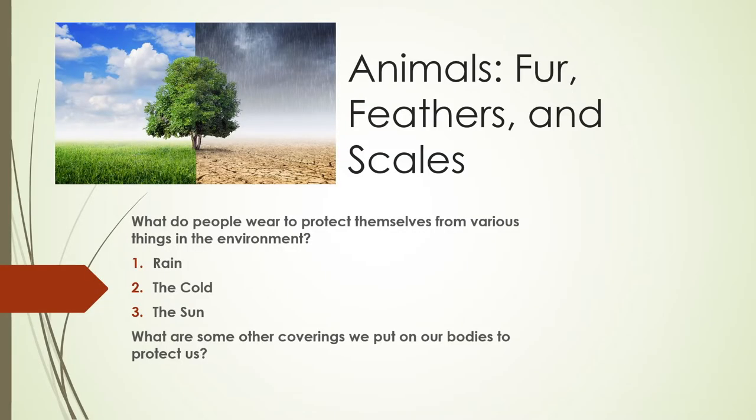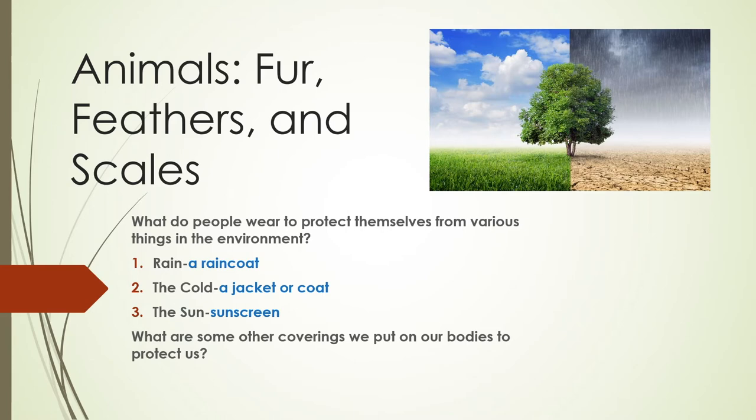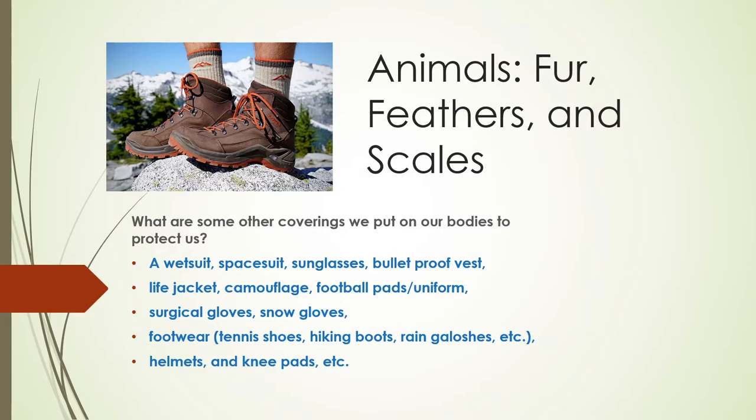Some of you may have said a raincoat for the rain, a jacket or coat for the cold, and sunscreen for the sun. Other coverings we put on our bodies include a wetsuit, space suit, sunglasses, bulletproof vest, life jacket, camouflage, football pads or uniform, surgical gloves, snow gloves, footwear like tennis shoes and hiking boots, helmets, and knee pads.